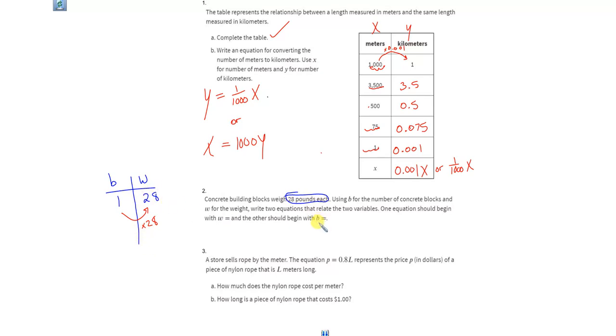And so when I write my first equation to find out what W, the weight of the blocks, are, we just take the number of blocks, which is B, and we multiply it by 28. So to show that, we have 28B. And what that does is that tells us what W equals.